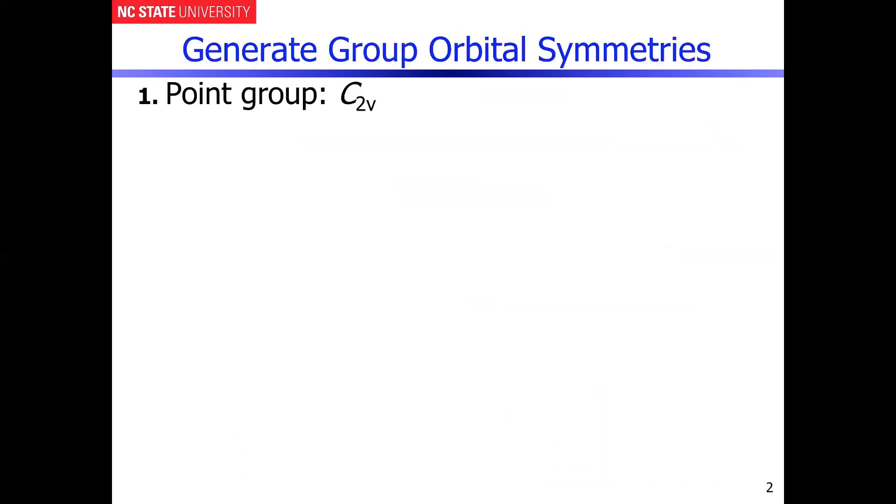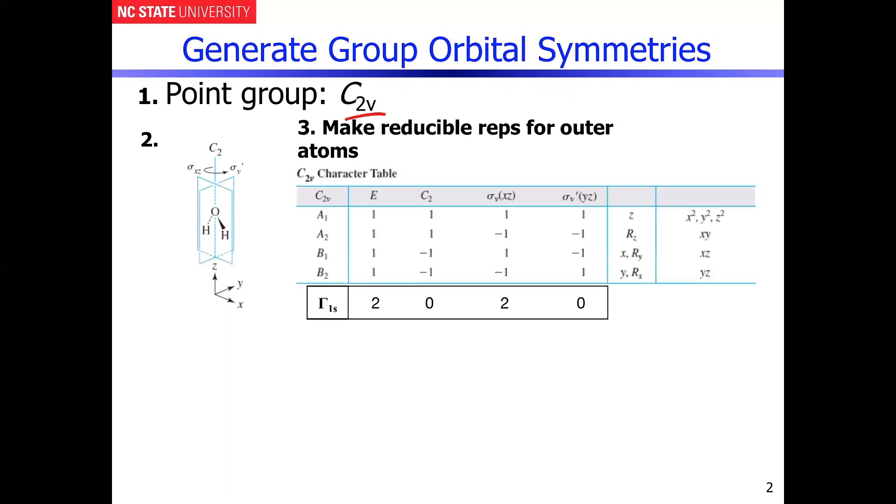So we've already established waters in the C2V point group. We have its geometric structure laid out as shown. And then we have to now make reducible representations for the outer atoms.